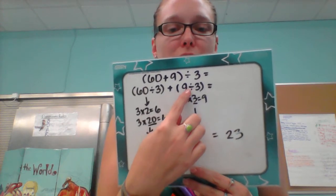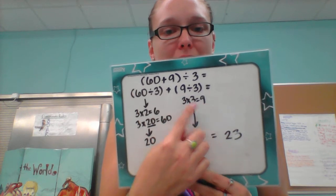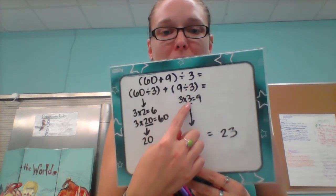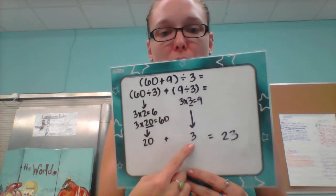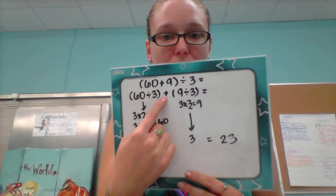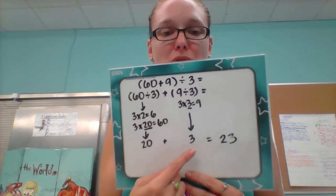Then for this one, I know 3 times 3 is 9, so 3 is my extra factor. So 3 down here. Now I add them together because remember it's addition in the middle. 20 plus 3 is 23.